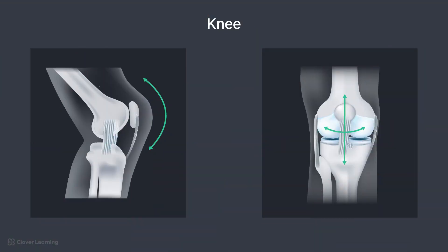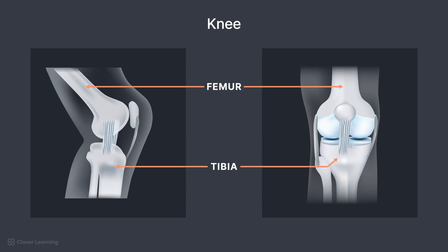The knee joint is classified as a synovial hinge joint with some capacity for rotation, allowing primarily flexion and extension, and limited internal-external rotation when flexed. It is the largest joint in the body, formed by articulations between the femur, tibia, and patella.